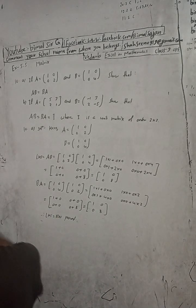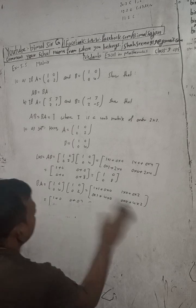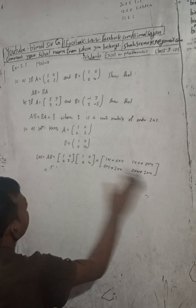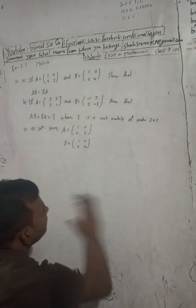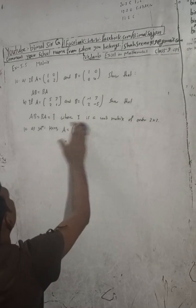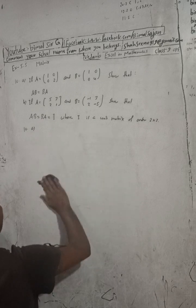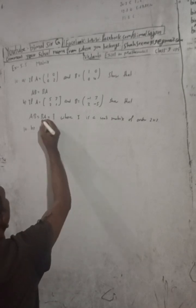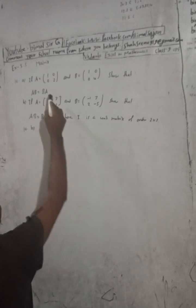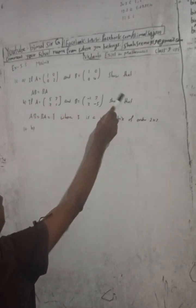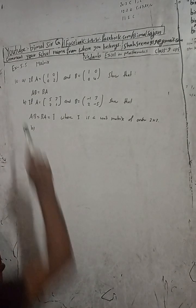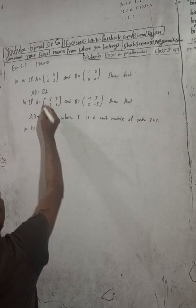Now part B. If A is equal to [5, 3; 2, 1] and B is equal to [-1, 3; 2, -5], show that AB equals BA equals I, where I is the unit matrix of order 2×2. Our target is first to prove AB equals BA. So 10B solution right here.